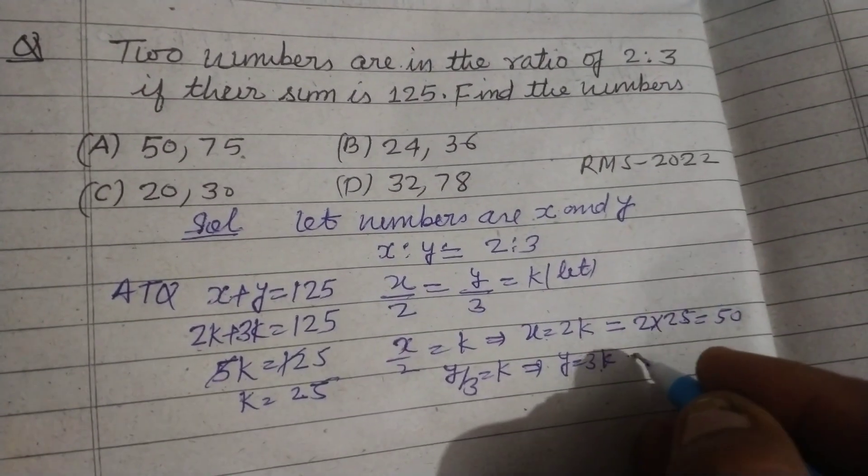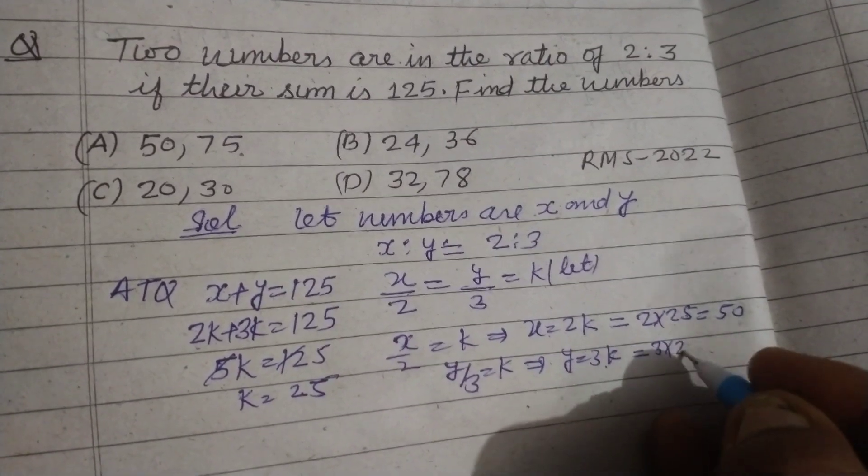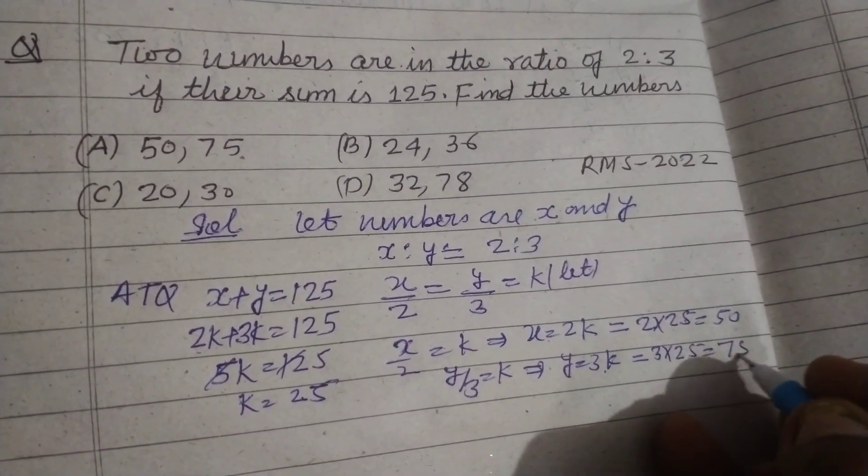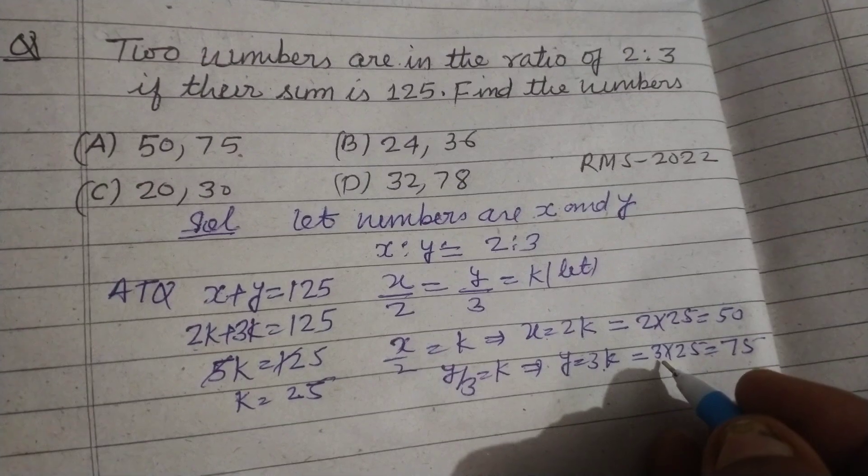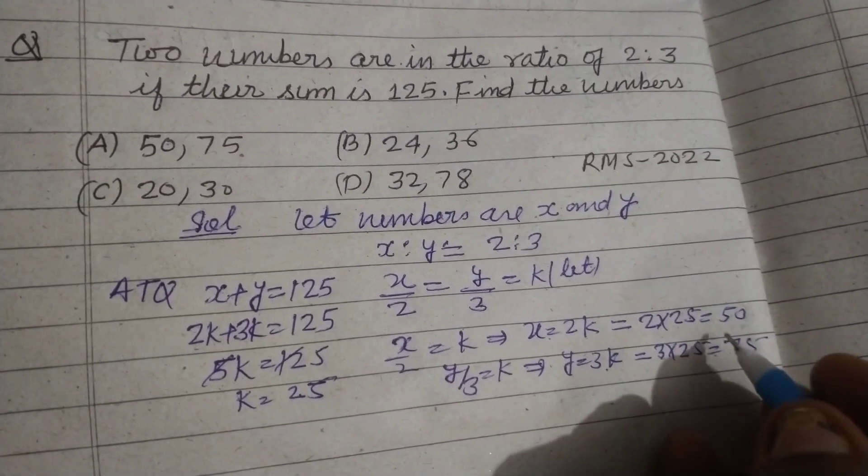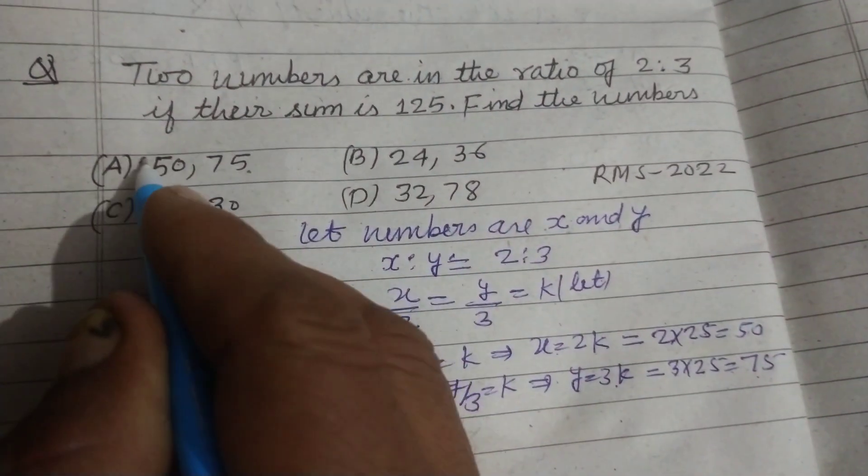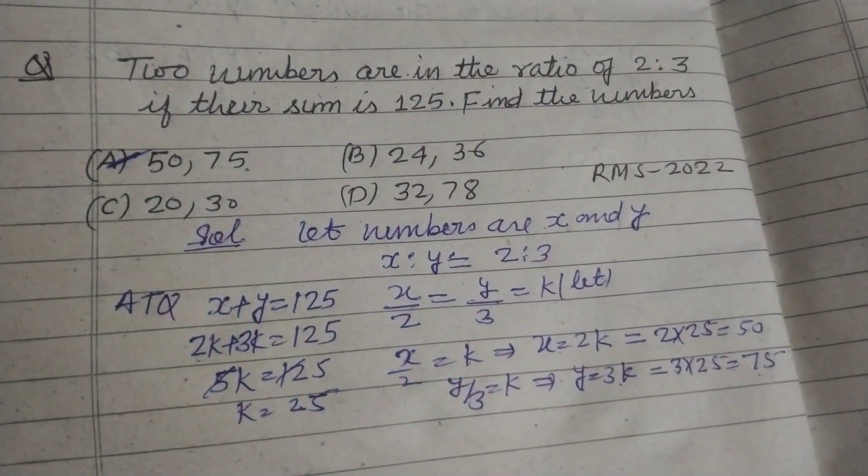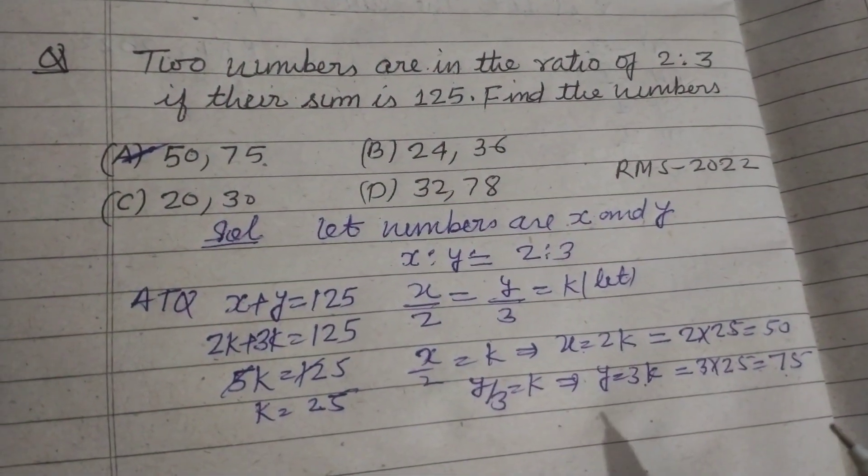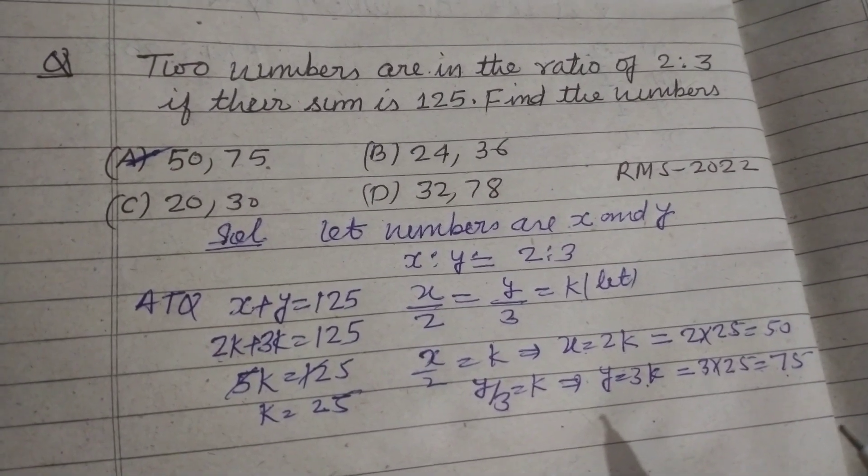Therefore, when we put the value k = 25, 2 times 25 is 50 for the first number, and 3 times 25 equals 75. So the numbers are 50 and 75, which is found in option A of this question. I hope you got it. Please like the video, subscribe the channel. Thanks for watching.